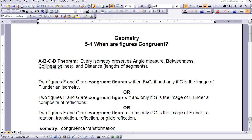Now in the next one, it says two figures F and G are congruent figures if and only if G is the image of F under a composite of reflections. Well that's just the same as what we've set up above, but we have also defined isometry as a composite of reflections.